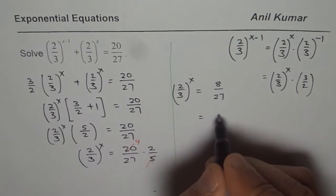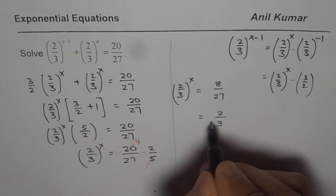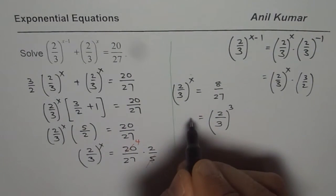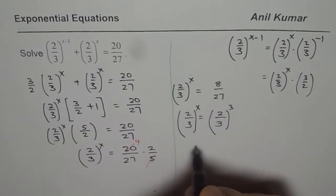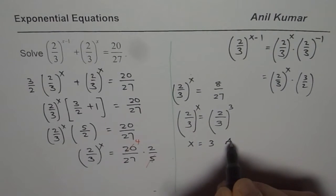Now 8 over 27 could be written as 8 is 2 cubed and 3 cubed is 27. So we get almost the same base. So we can now compare the exponents. So x equals to 3 is our answer.